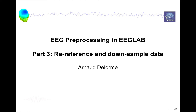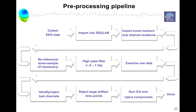Hello, my name is Arnold Delorme and I'm the main software architect of the EEG lab software. This is part 3 of EEG processing where we're going to talk about re-referencing and downsampling the data. We've already imported data, imported events and channel locations, and now it's time to re-reference and downsample the data.